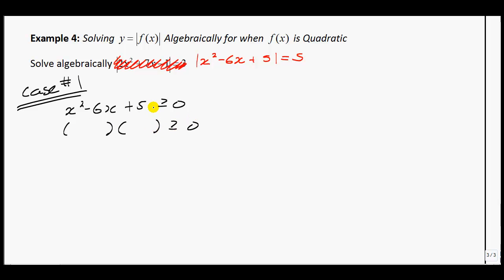So we're looking, when is this quadratic greater than 0? Well, to factor this, what numbers multiply to give you 5 that have a sum of negative 6? That'd be x minus 5 and x minus 1.